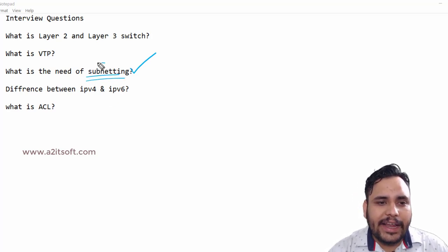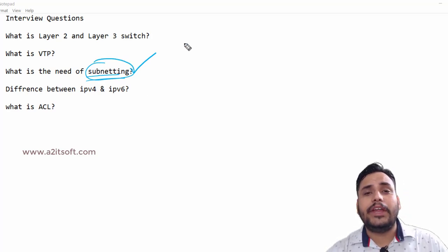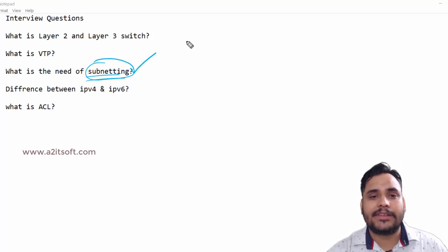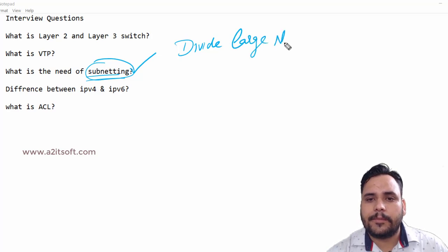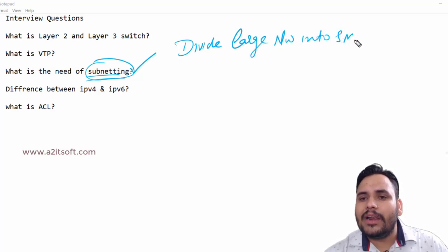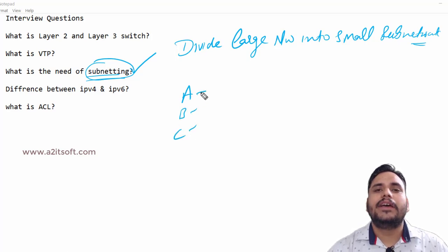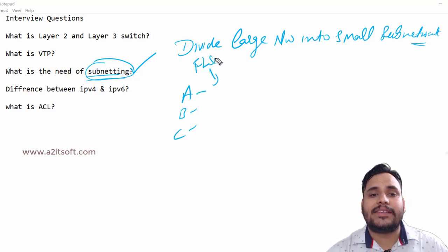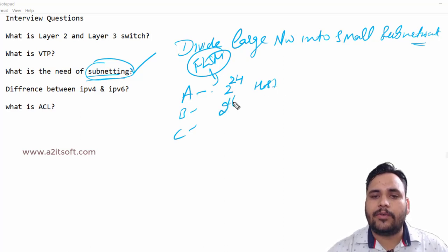Now let's move on to an important question - 90% of companies discuss this: What is the need of subnetting? First, we need to know what is subnetting. Subnetting is dividing large networks into small sub-networks. As we know, if we are using Class A, Class B, Class C, they work on FLSM - fixed length subnet mask. In Class A we have 2^24 hosts, in Class B we have 2^16 hosts, in Class C we have 2^8 hosts - fixed host values: 256, 65,536, 16 million.